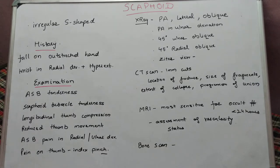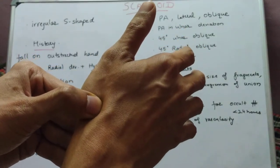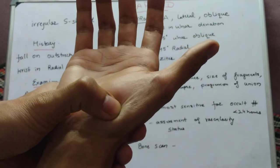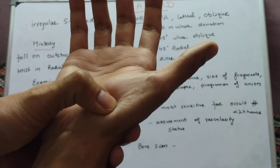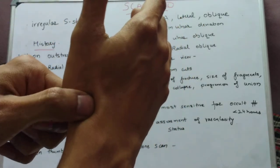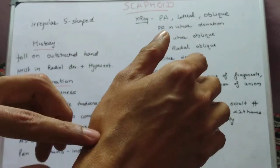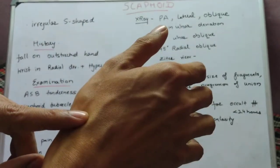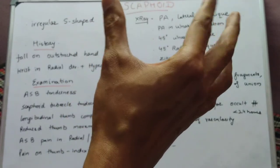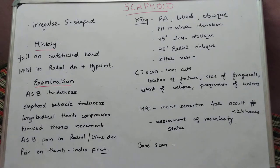Various examination points can lead to the diagnosis of scaphoid fracture: first is anatomical snuff box tenderness; then scaphoid tubercle tenderness, palpated over the volar aspect; on longitudinal thumb compression there may be pain at the scaphoid region; the patient may complain of reduced or painful thumb movement; there may be pain at the anatomical snuff box in radial or ulnar deviation; and lastly, pain over the thumb pinch movement. If the patient has this history with a few positive points on examination, we should think of scaphoid fracture.